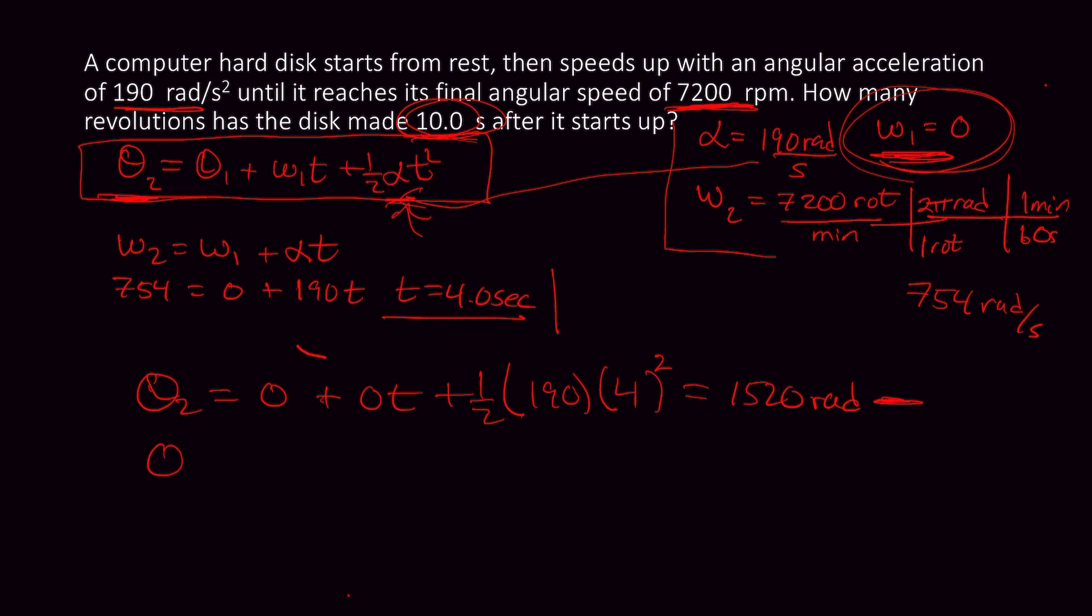Then I'm going to have to do θ2 equals 0. This is for the second segment, for the 6 seconds remaining, plus, but now the W1 right here, its speed has sped up to 754. So 754 times 6, the 6 remaining seconds, plus 0, because this last term right here, it's not accelerating. And so this comes out to 754 times 6, that adds up to 4,524 radians.